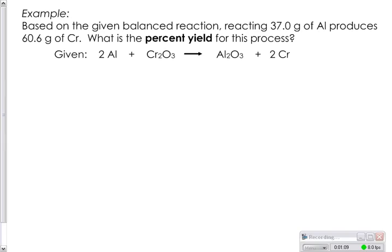The example problem says, based on the given balanced reaction, reacting 37 grams of aluminum produces 60.6 grams of chromium. What's the percent yield for this process? So if you go through the problem, like you normally would, you were given 37 grams of aluminum, and you were given 60.6 grams of chromium.